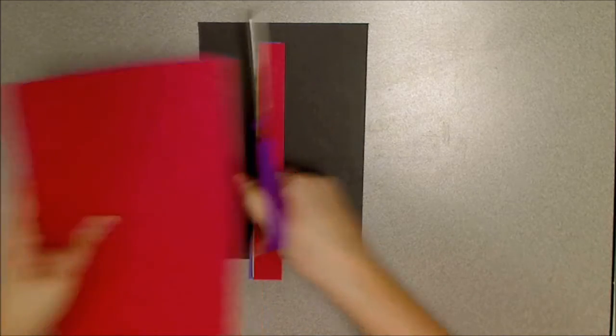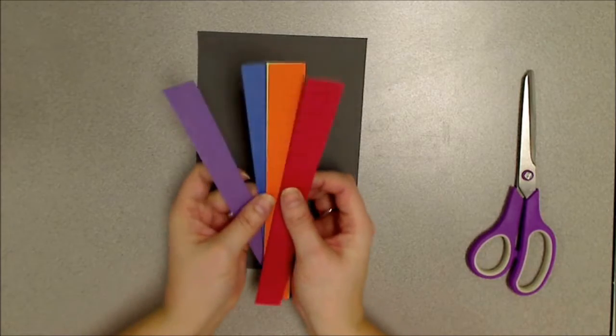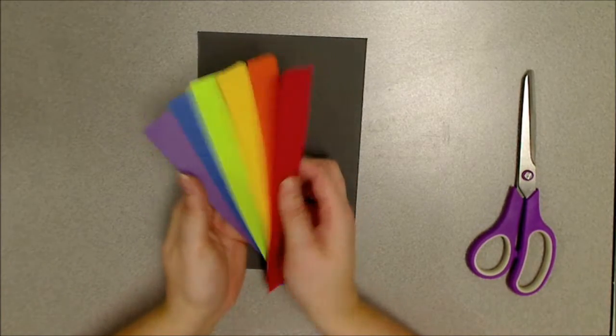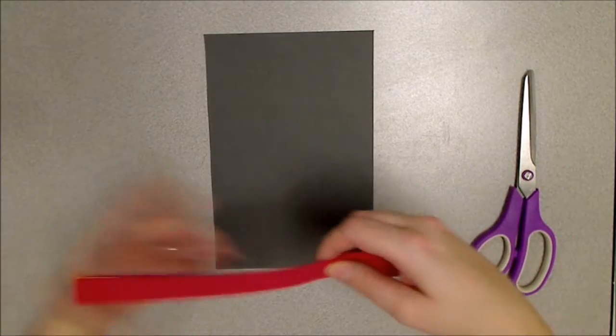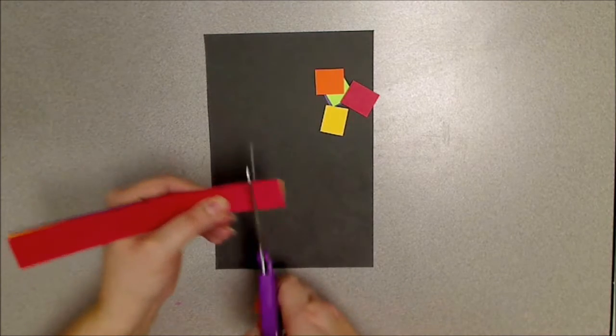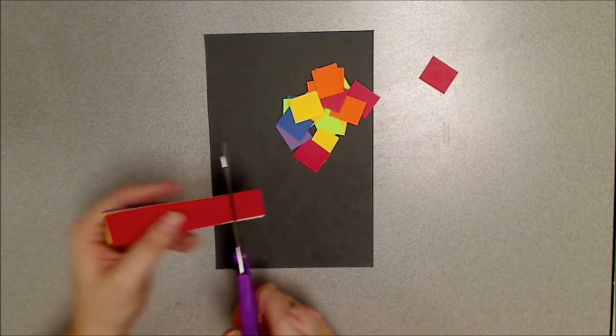They do not have to be the same size, they can be different sizes, they can be triangles, completely up to you. So there's my strip of papers. Now I want to take these strips of paper and cut them into different size rectangles, so rectangles or squares or whatever they turn out to be.